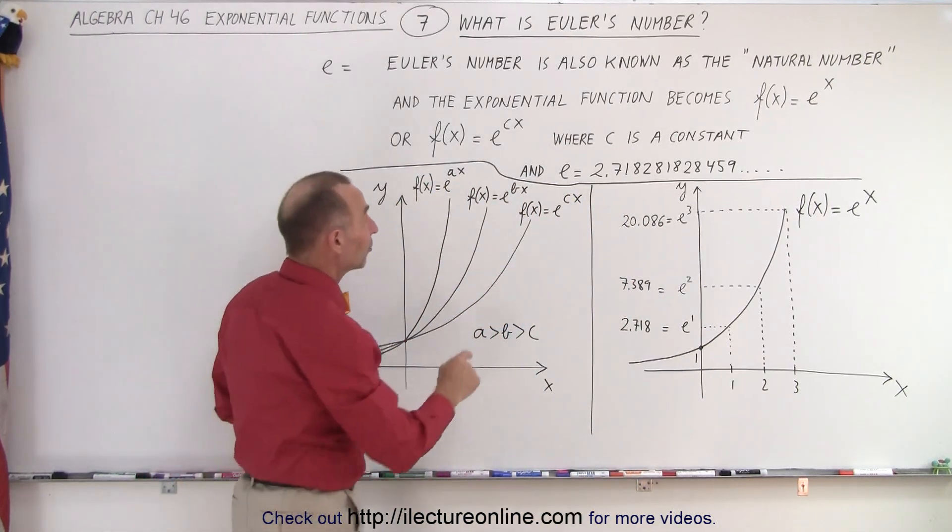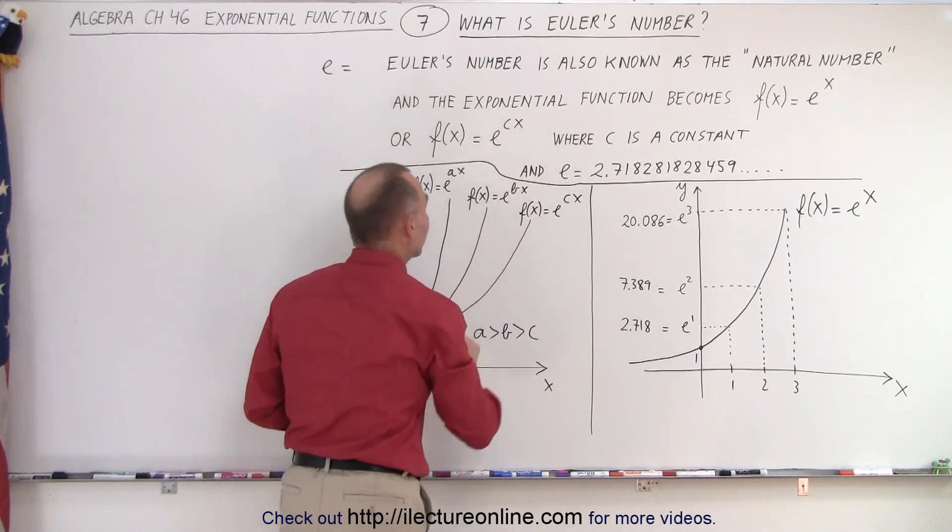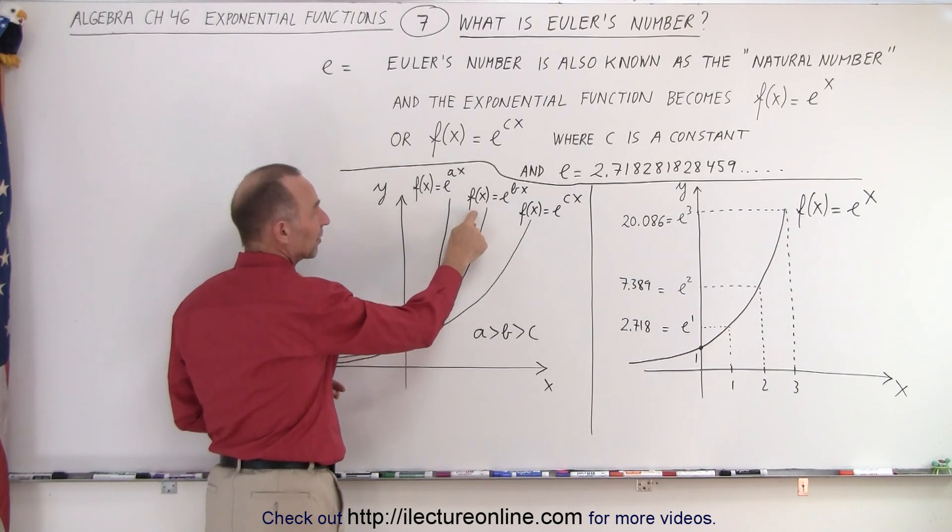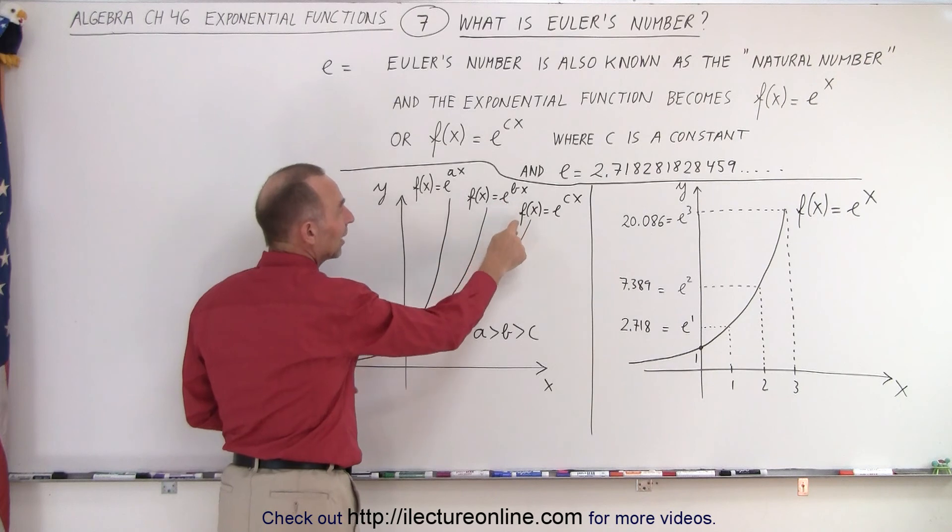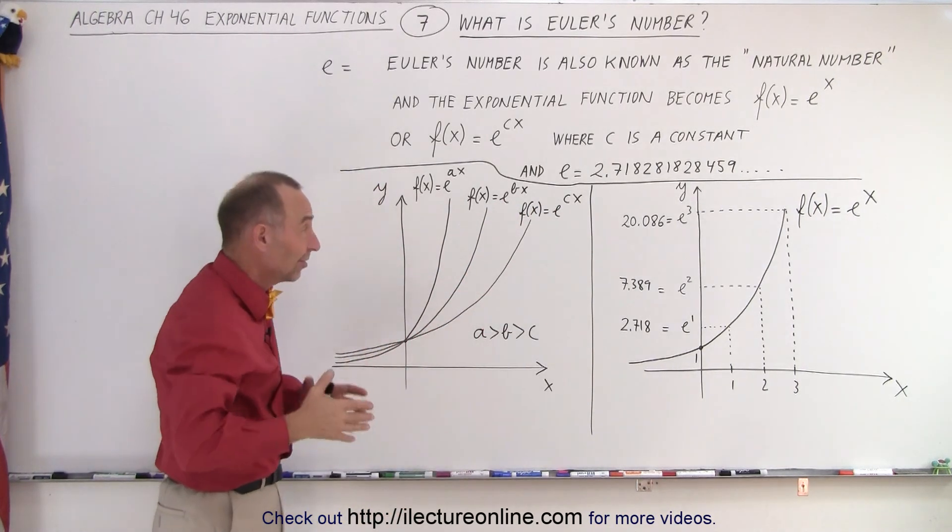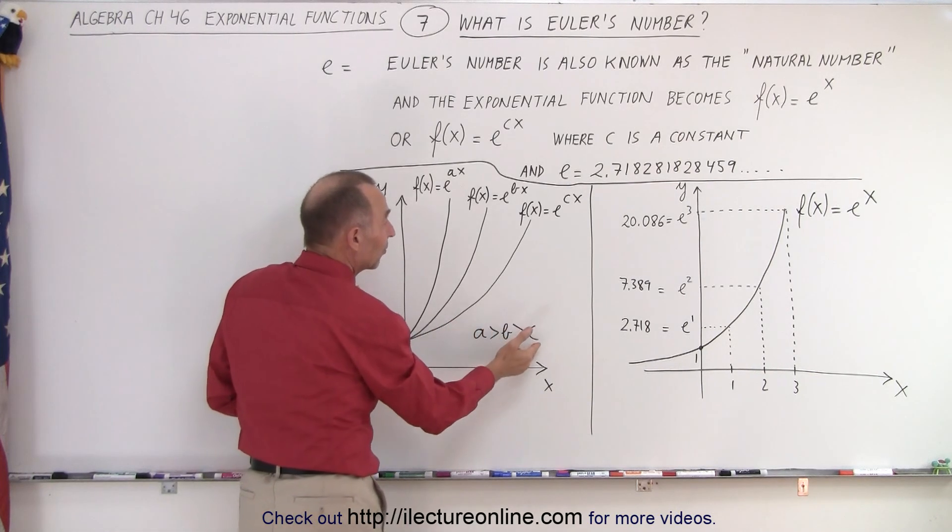Now, of course, we mentioned that we can sometimes use the function f of x equals E to the cx. So, here I have three functions: f of x equals E to the ax, f of x is equal to E to the bx, and f of x is equal to E to the cx. Now, a, b, and c are simply constants. And notice that a is bigger than b, and b is bigger than c.